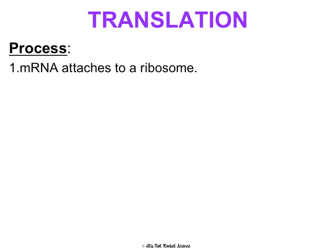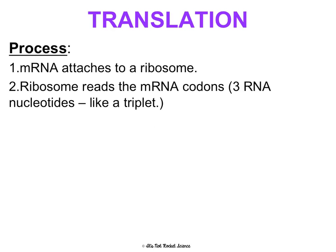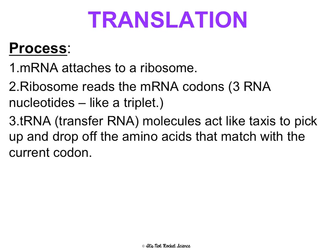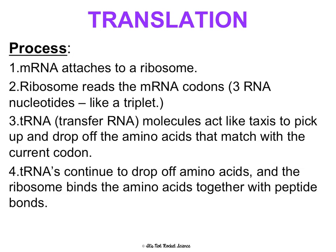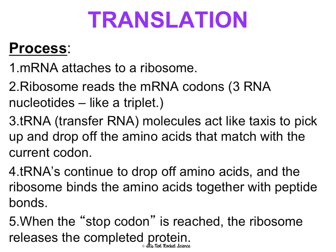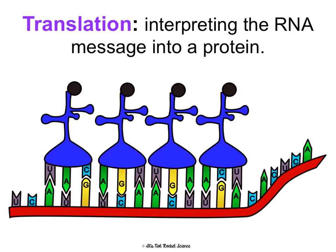Here are the steps of translation. First, the mRNA attaches to the ribosome. The ribosome reads the mRNA codons — a codon is three nucleotides, read three letters at a time. The tRNA acts like taxis, picking up and dropping off amino acids that match whatever codon is currently being read. The ribosome bonds those amino acids together using peptide bonds. It keeps going until it reaches a stop codon, then releases the completed protein. The anticodons on tRNA match up with the codons on mRNA, bringing whichever amino acid those codons code for.